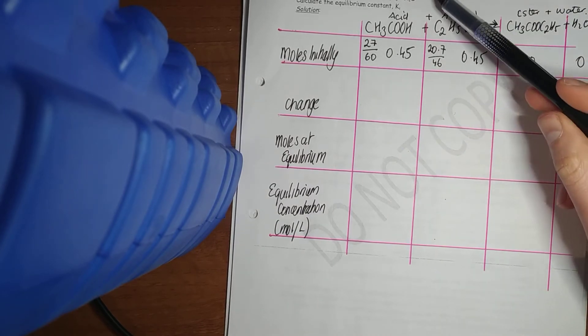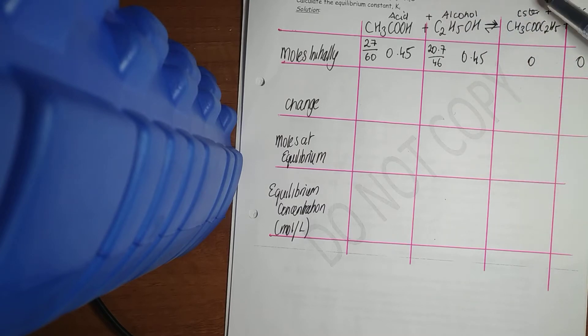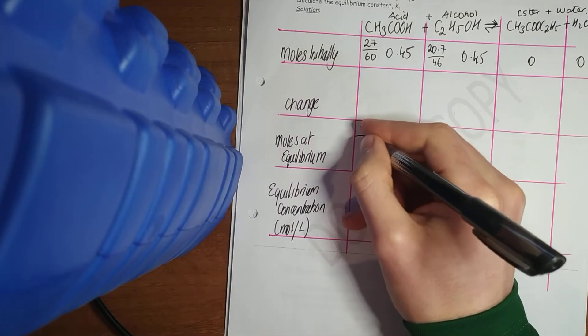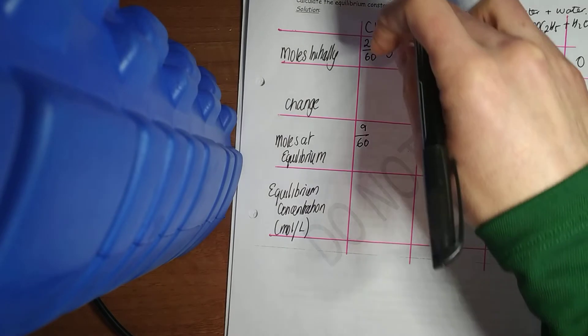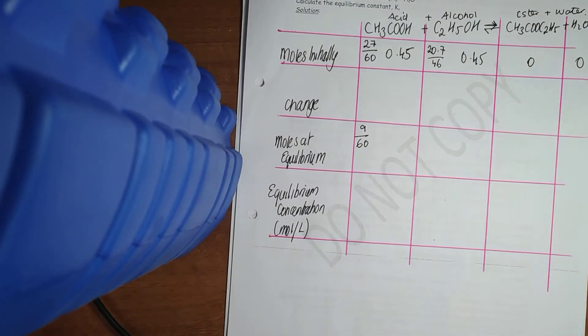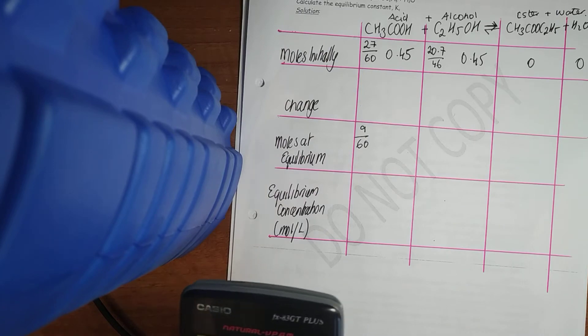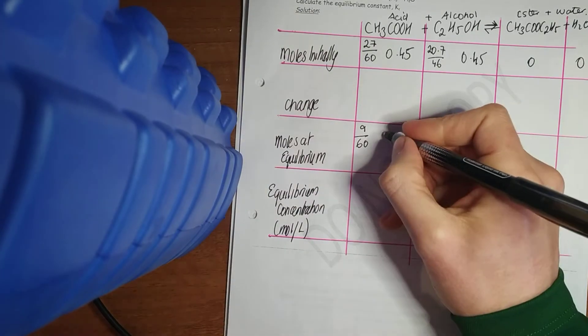Now to come to equilibrium at a certain temperature, it was found by experiment that 9 grams of ethanoic acid was present. There's my ethanoic acid. Moles equilibrium. 9 over 60. See it's less because your reactants have been converted into your products. So it's a third of that. So it should give me 0.15 moles.